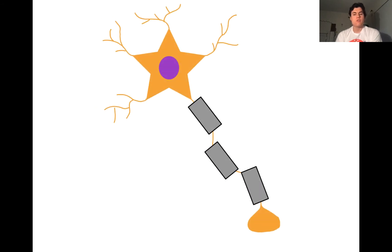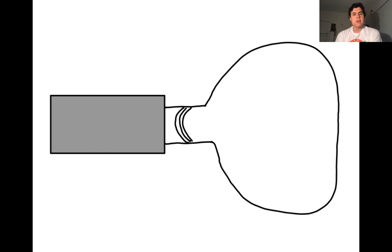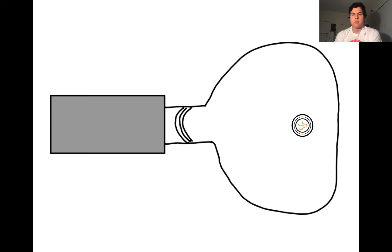I'd like to start off by first looking at the neuron. We're going to zoom in at the synaptic terminal. Inside the synaptic terminal, we have vesicles packaged with neurotransmitters, and these vesicles are going to be stored at the active zones. In order to release the neurotransmitters, we have to have a signal, and the signal is going to originate from voltage-gated sodium channels.